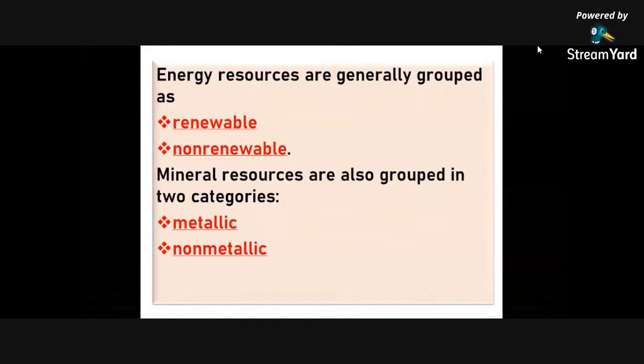Another is mineral resources. These are grouped into two categories: metallic and non-metallic. Metallic mineral resources examples are gold, silver, tin, copper, lead, zinc, iron, and nickel, while non-metallic such as sand, gravel, uranium, and dimensional stone.